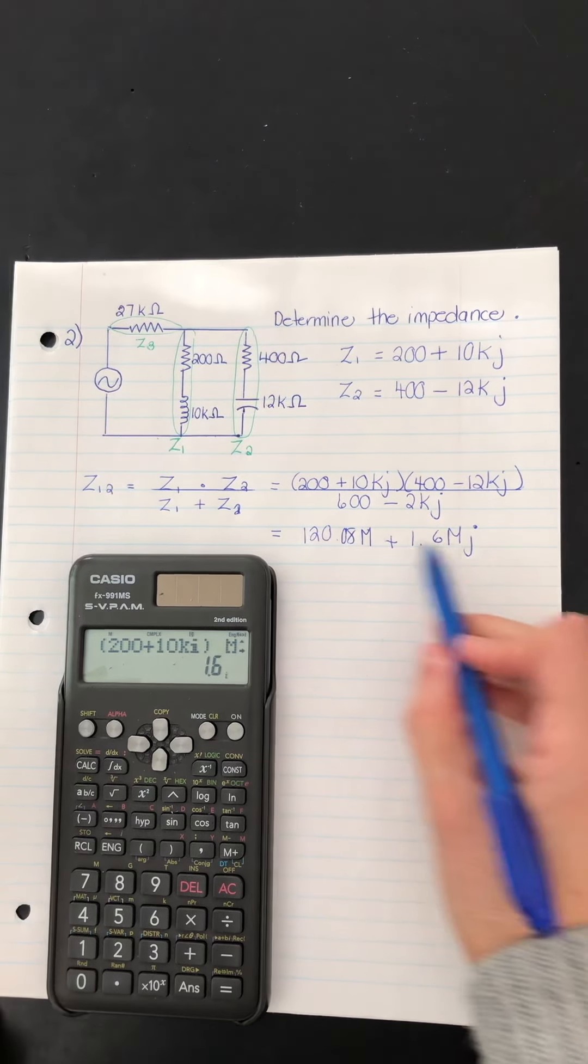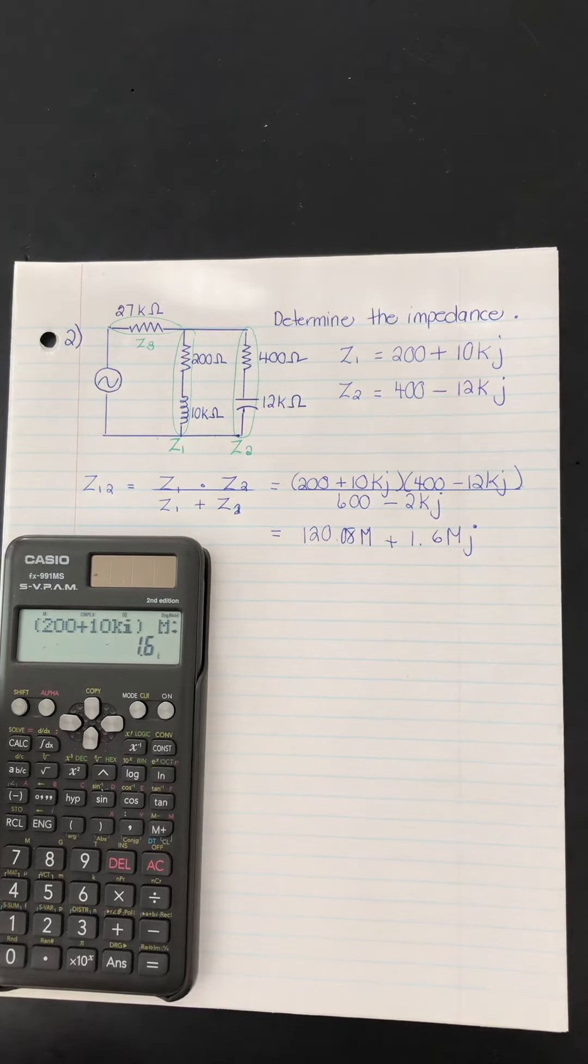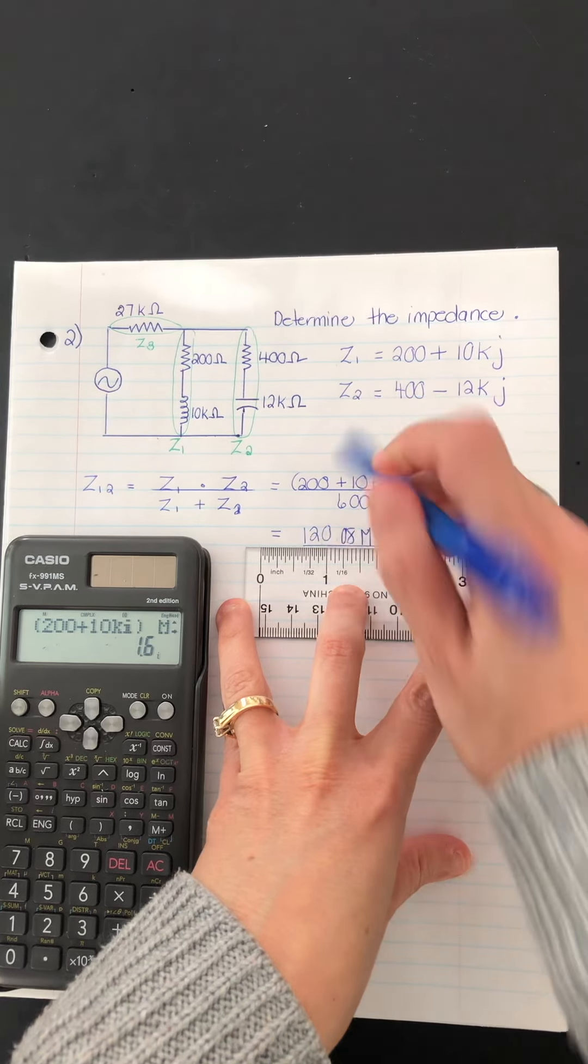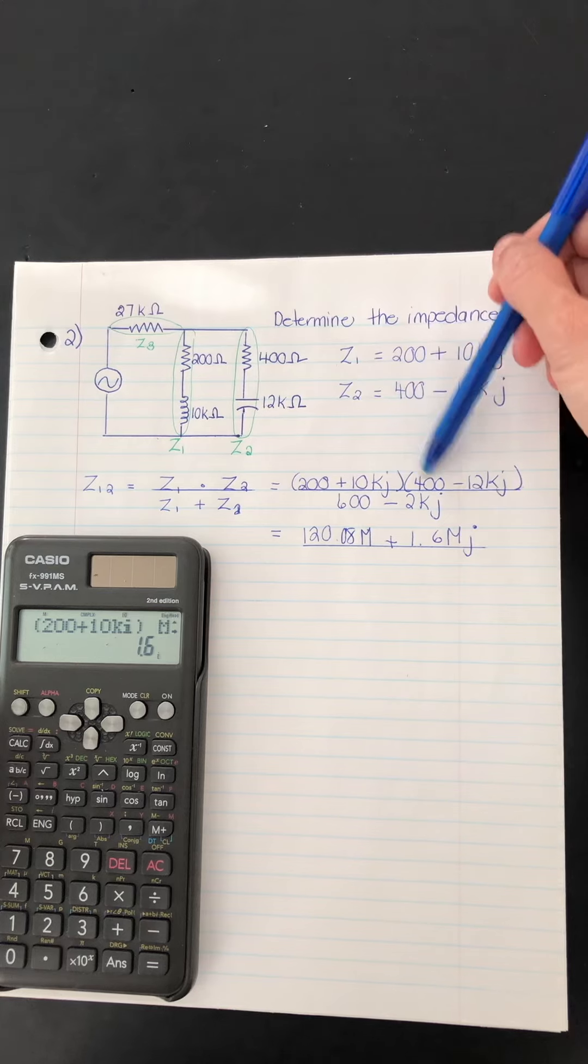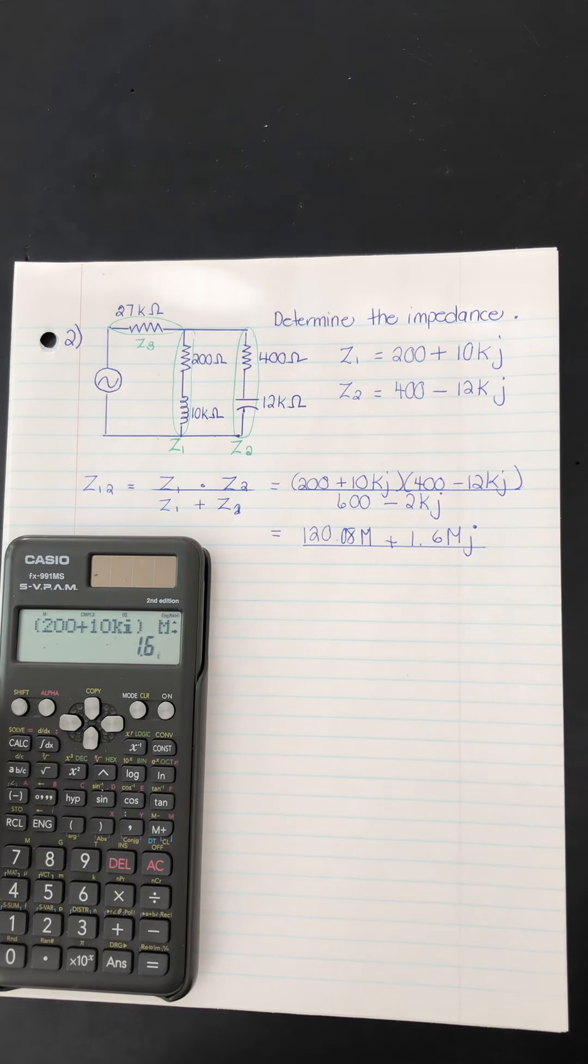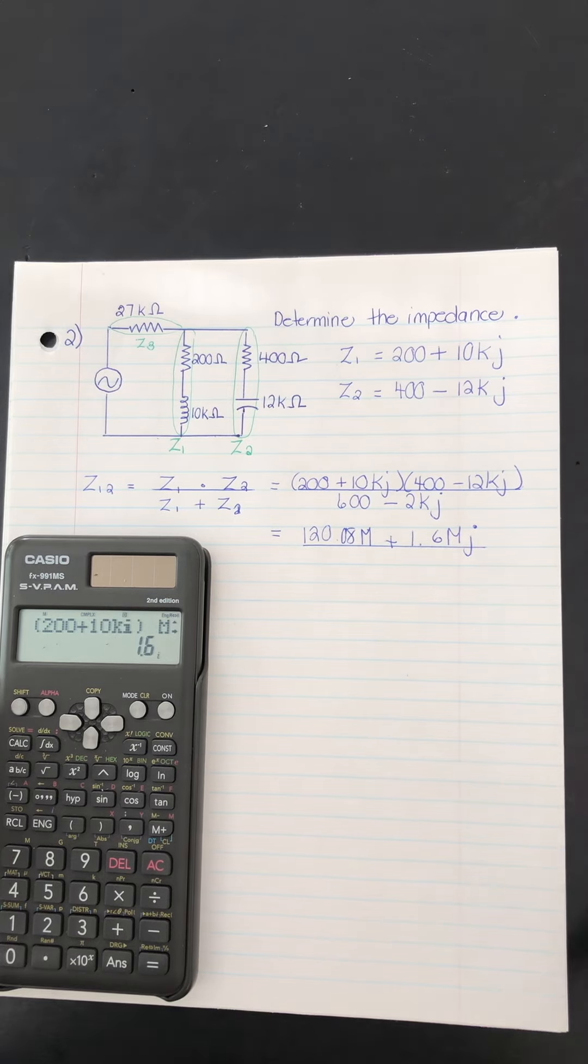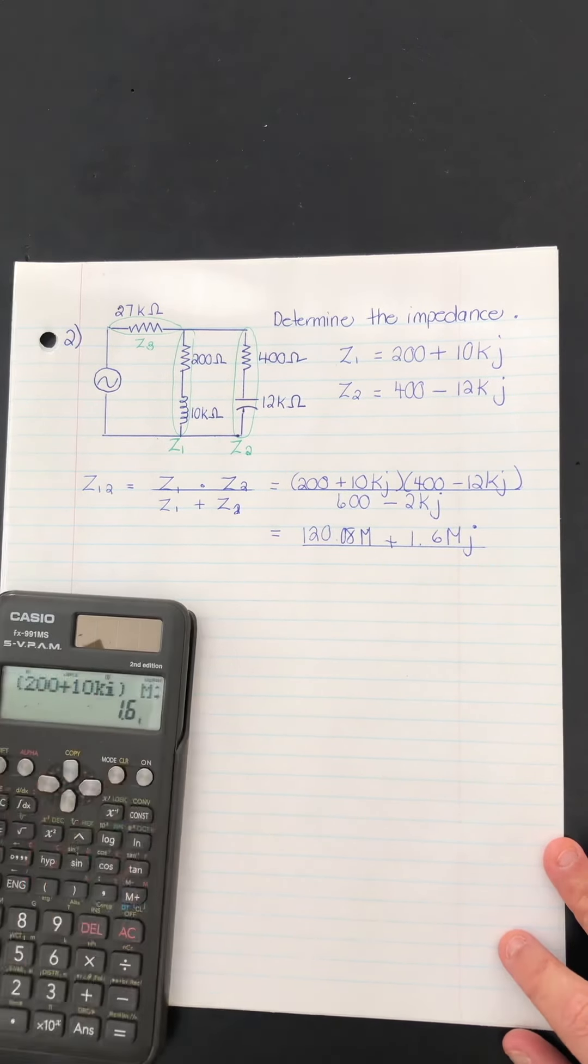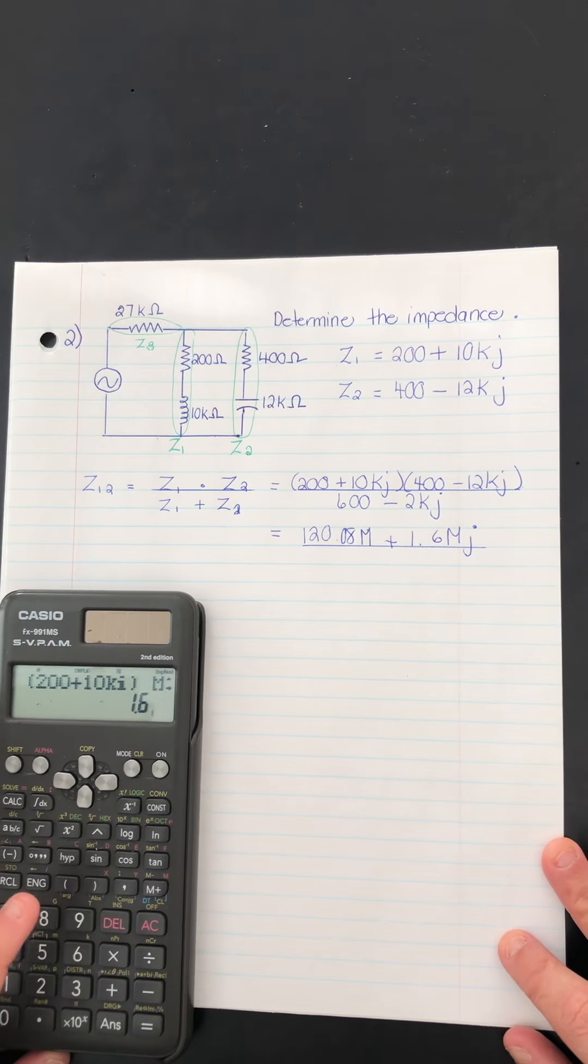And I didn't have to do first, outside, inside, last, and then make J squared equal to negative 1 and then collect like terms. You do need to know how to do that, but not within the circuit applications. Now I didn't clear the calculator. And that's because with that number in here now, I just want to do the division.